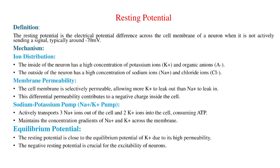The cell membrane is selectively permeable, allowing more K⁺ to leak out than Na⁺ to leak in. This differential permeability contributes to a negative charge inside the cell.